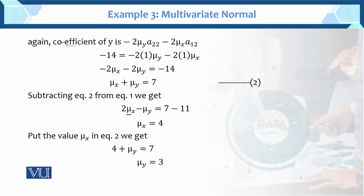Now for the coefficient of y, which is minus 14, we enter the same values. We have minus 2, divided by 2, giving the answer 7. This is called equation number 2, involving mu_x and mu_y.